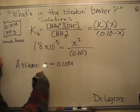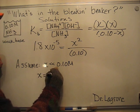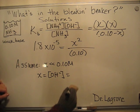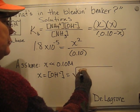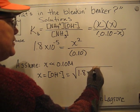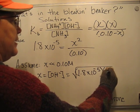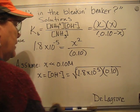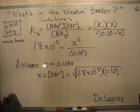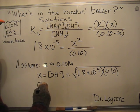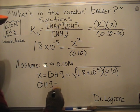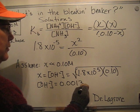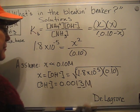Solving for X, which I know is hydroxide ion concentration, I end up getting the square root of 1.8×10^-5 times 0.10. When I solve for that, I end up getting hydroxide ion concentration equal to 0.0013 rounded to two sig figs, and that's molarity.